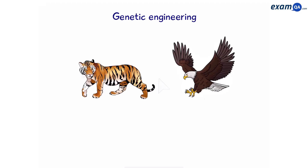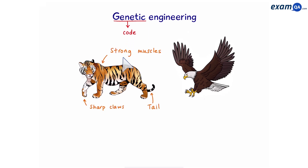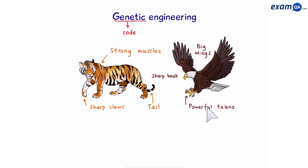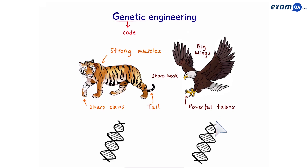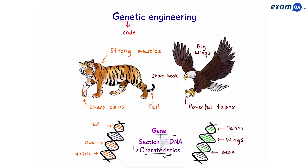Genetic engineering. Organisms have different traits and this is due to their genetic code. For example, a tiger has strong muscles, a tail and sharp claws, and an eagle has big wings, a sharp beak and powerful talons. The instructions to create these organisms are found in the DNA. Within the DNA, short sections have the instructions to code for different characteristics. These are known as genes — a section of DNA that codes for a particular characteristic in an organism.